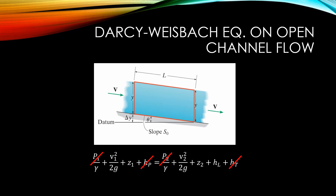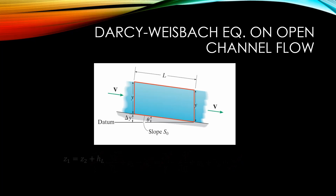Similarly, if our cross-section is uniform, then there should be no change in velocity from the upstream control surface to the downstream control surface, so we can cancel out the velocity from this term. This leaves us with an equation of head loss as a function of the elevations of the control surfaces.